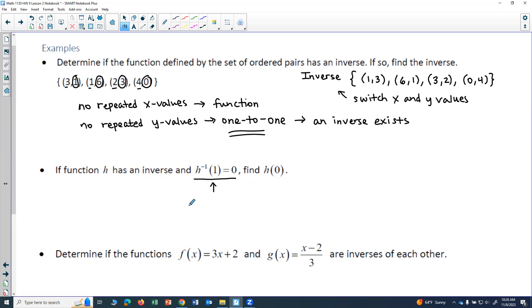So this means that on h inverse of x, there is the ordered pair (1,0), because h inverse of 1 equals 0, so that would be my input, 0 would be my output.